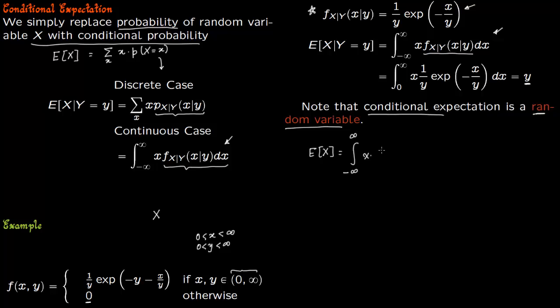x times f of capital X times small x dx. If you integrate this, because you're giving proper limits and you're integrating over x, this will be a number.